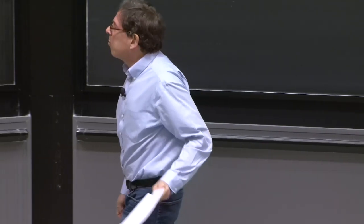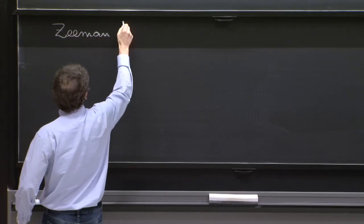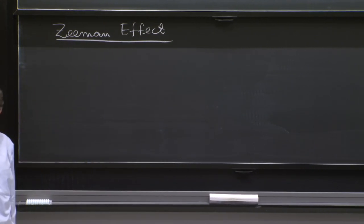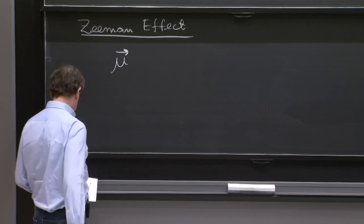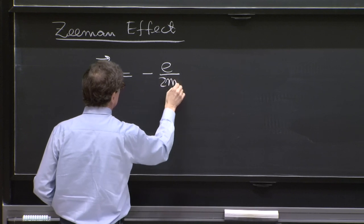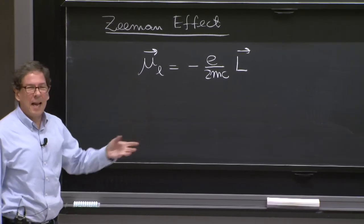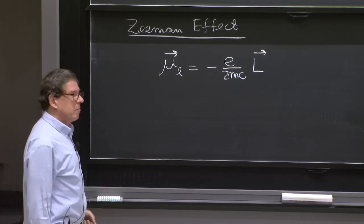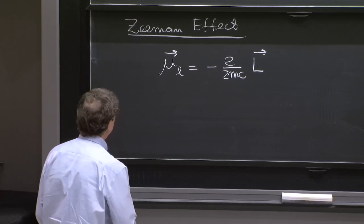So what is the Zeeman effect? We have the magnetic field interacting with the electron. And the electron now has two magnetic moments, a magnetic moment associated with the orbital motion. This looks completely like the classical formula of the magnetic moment due to a particle that goes in circles. It produces a current. And that current is proportional to the angular momentum of the rotating particle.